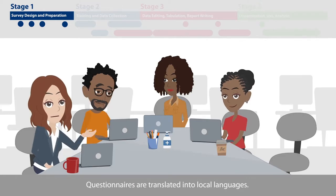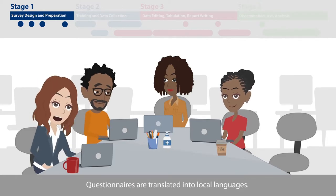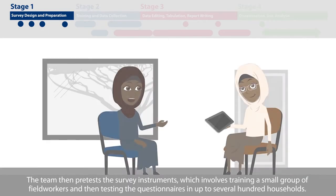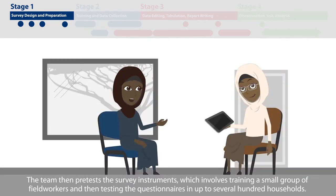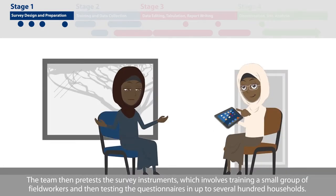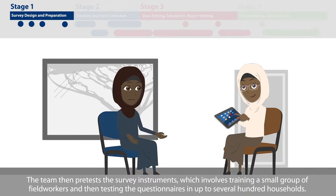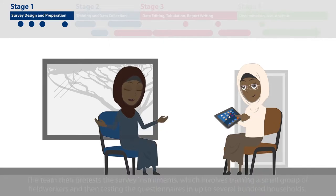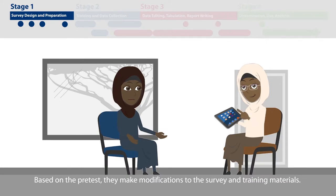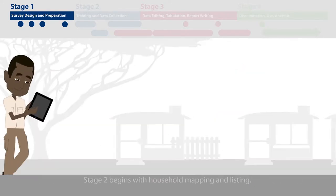Questionnaires are translated into local languages. The team then pre-tests the survey instruments, which involves training a small group of field workers, and then testing the questionnaires in up to several hundred households. Based on the pre-test, they make modifications to the survey and training materials.